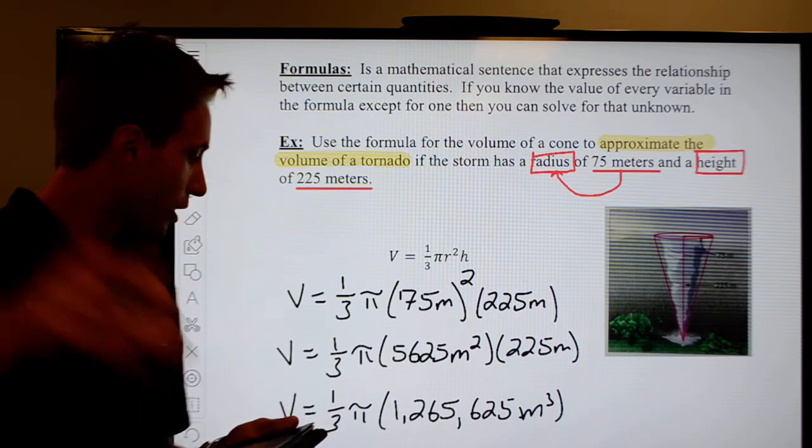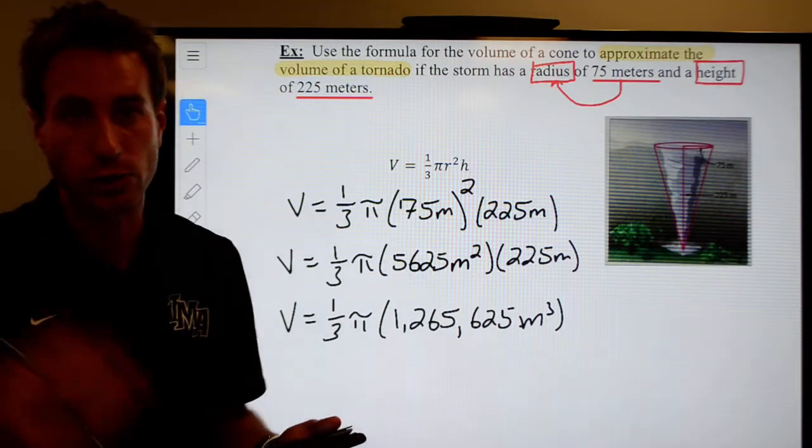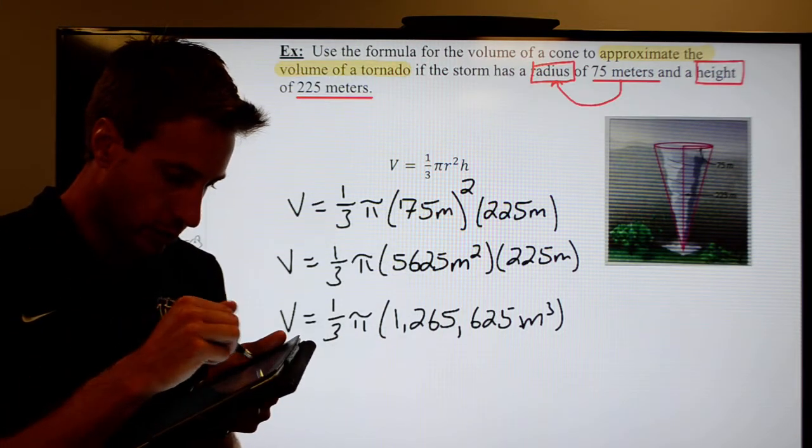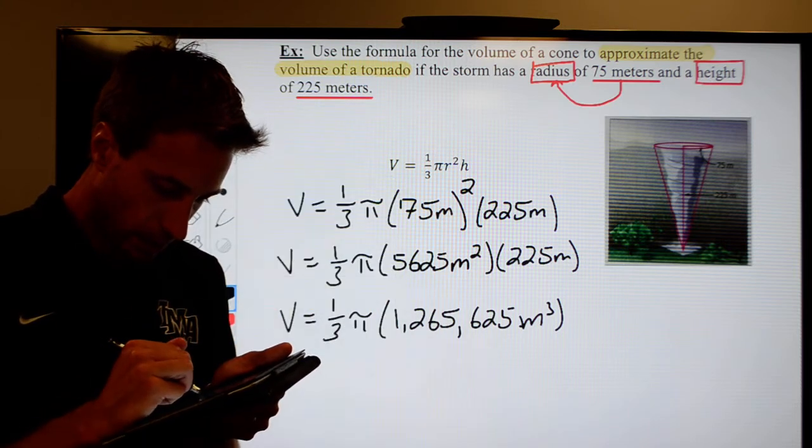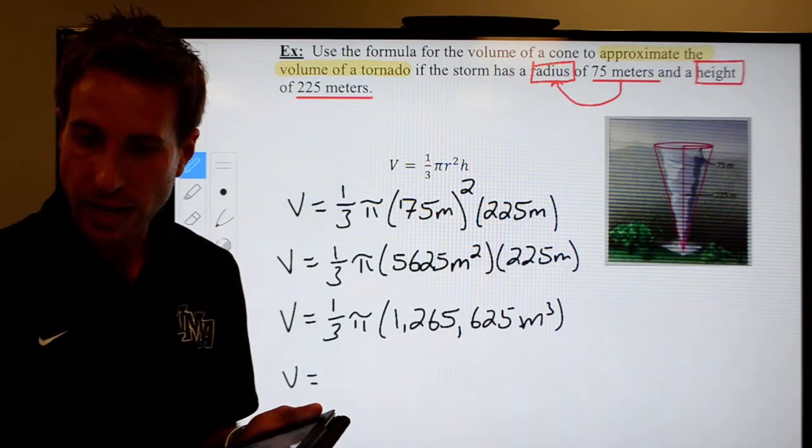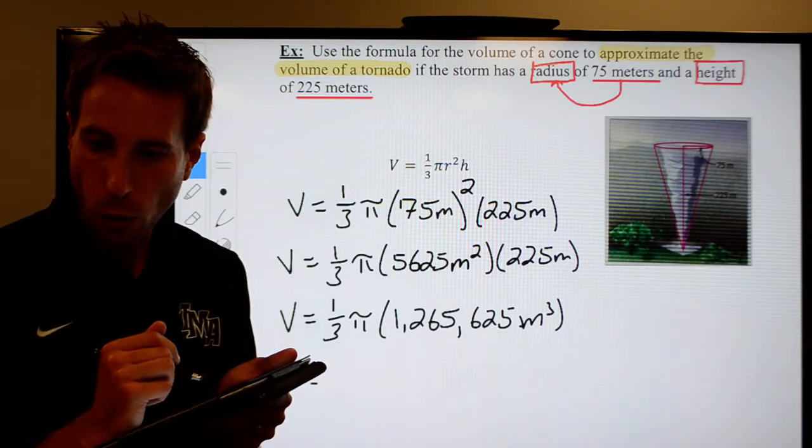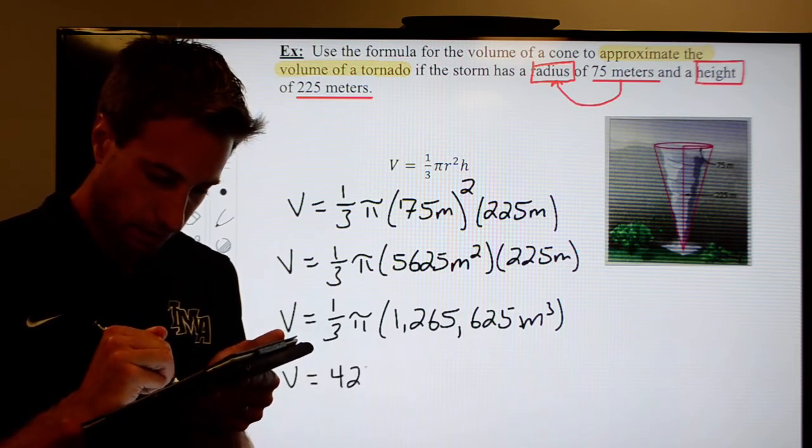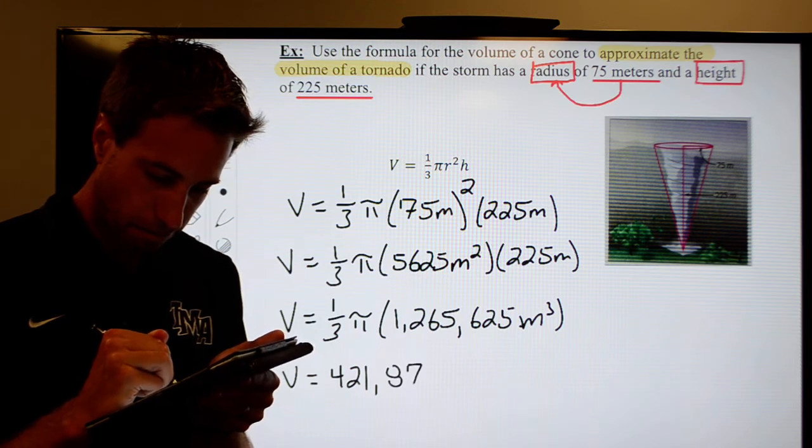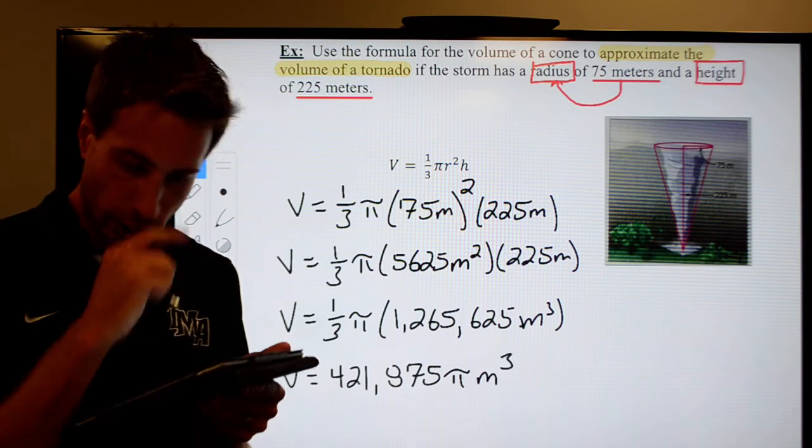Now what we're going to do is I'm going to go ahead then and multiply by my one third. It's actually dividing by three. So we'll go ahead and do that. Let me get my marker back here. V is equal to, let's see here. When I divide by three, I get 421,875. Don't forget your pi. And that's going to be meters cubed.